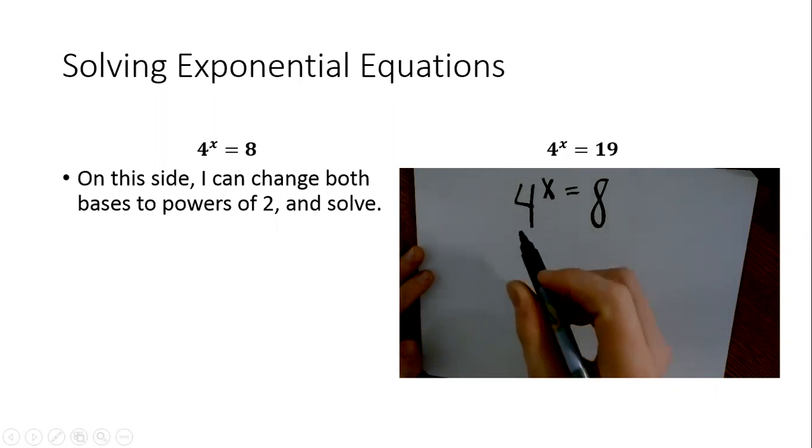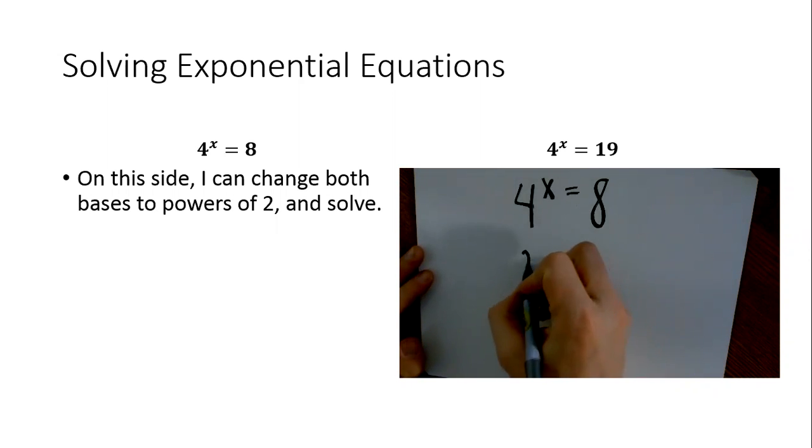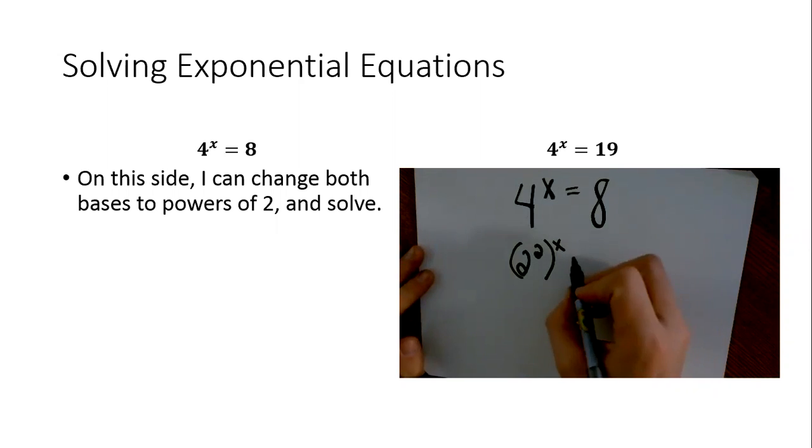I can say 4 is a power of 2. 4 is 2 squared. So instead of saying 4 to the X, I can really change that to just 2 squared to the X. And then I can say, well, 8 is also a power of 2. That's 2 to the third.